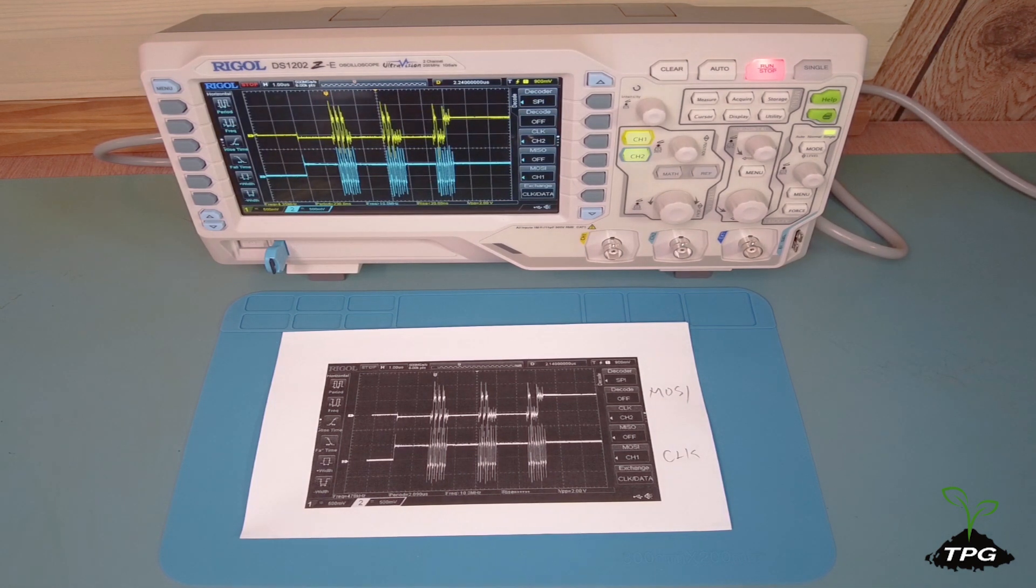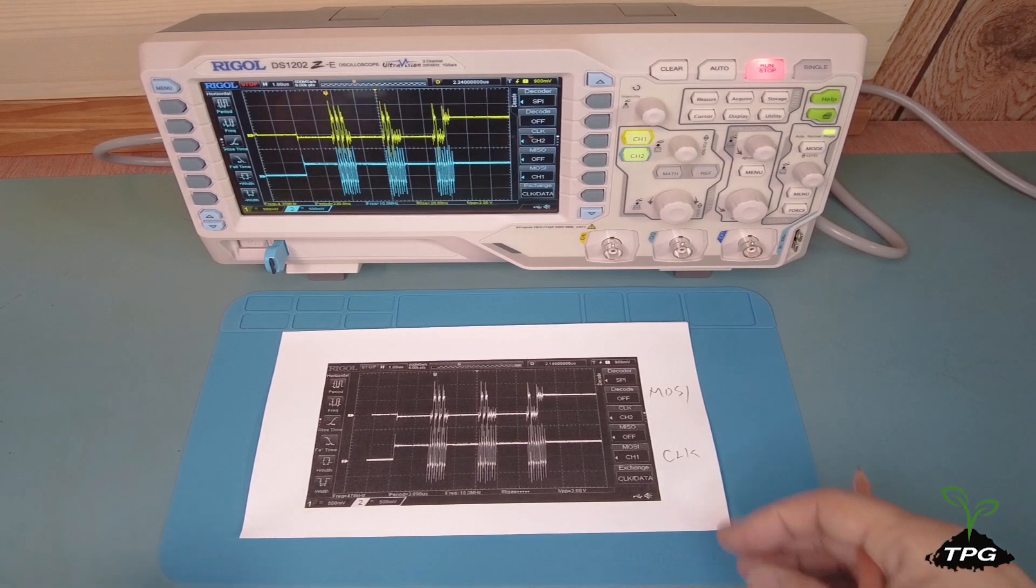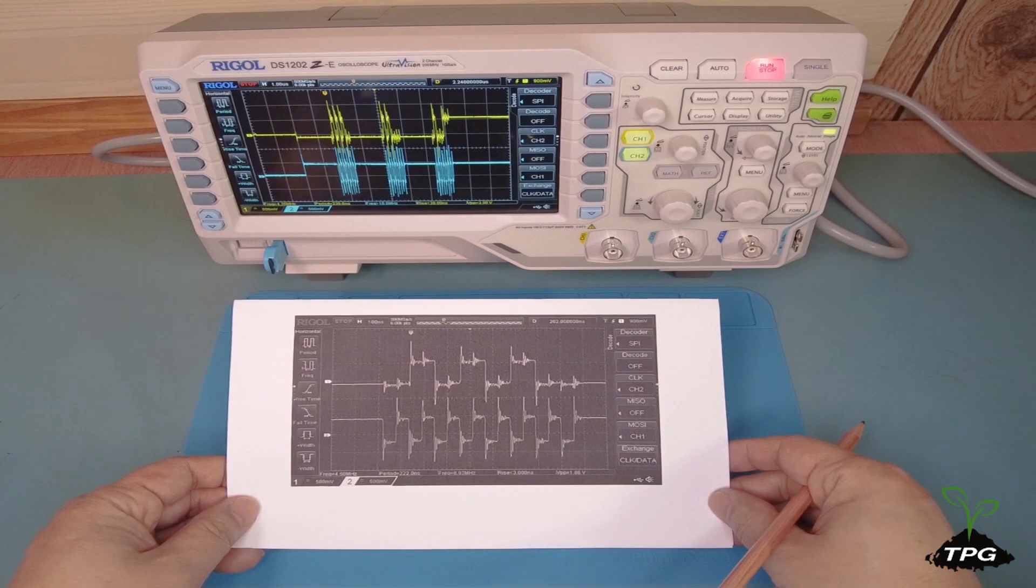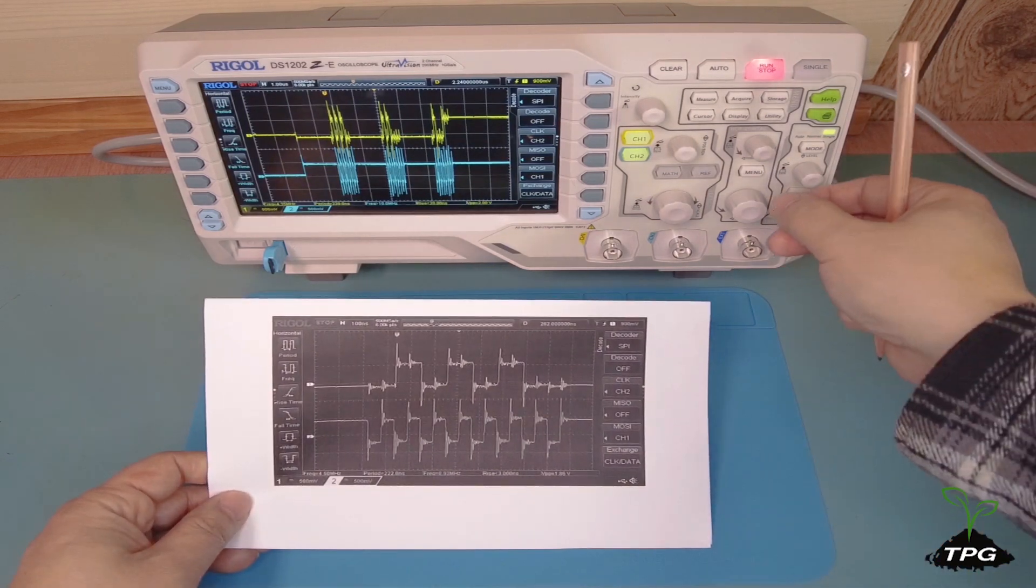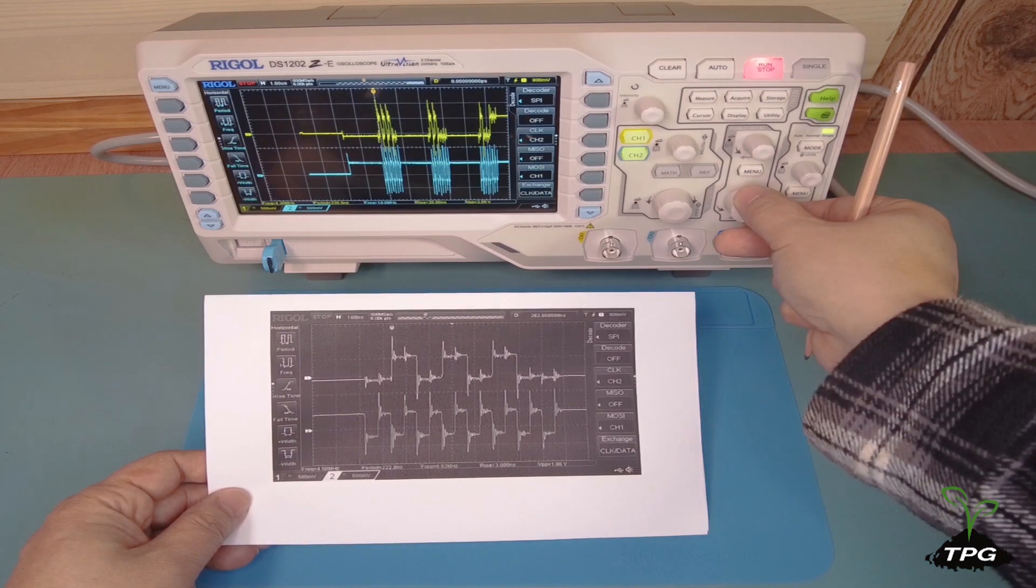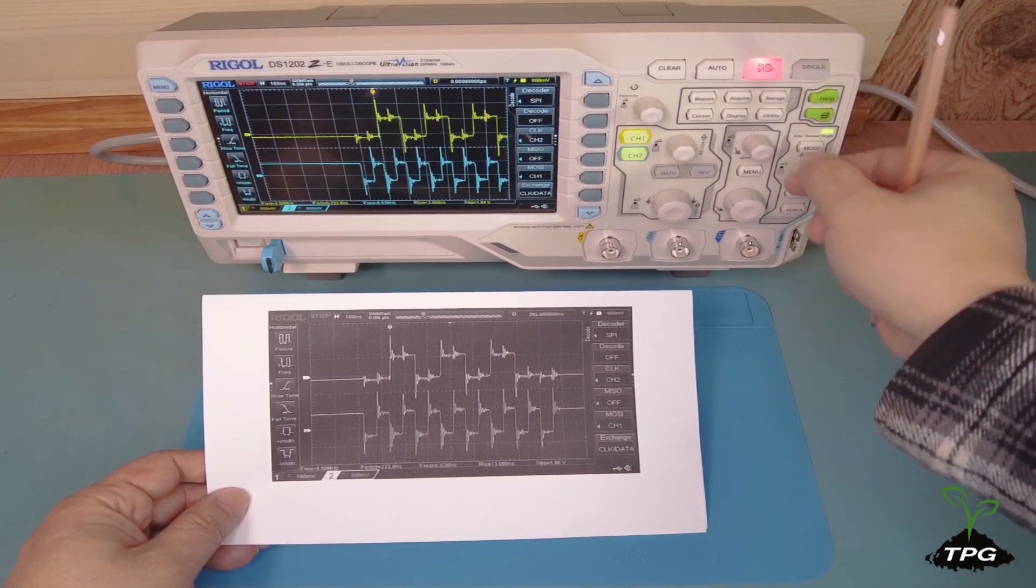During each clock cycle, MOSI transmits a single bit of data. In this particular case, the SPI communication mode is configured such that the idle state of the clock signal is a high voltage. Data bits are shifted onto the data line on odd clock edges and sampled on even clock edges.